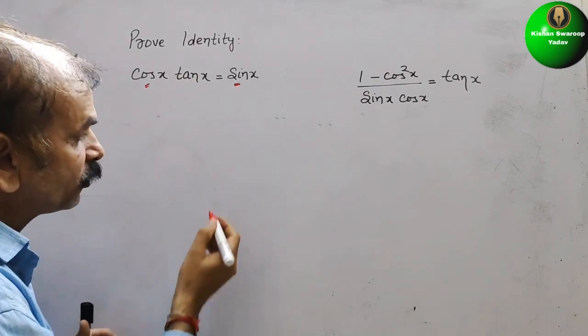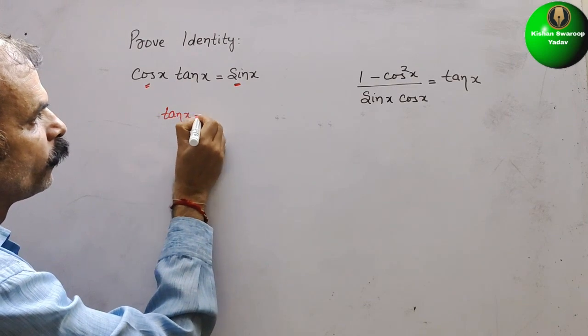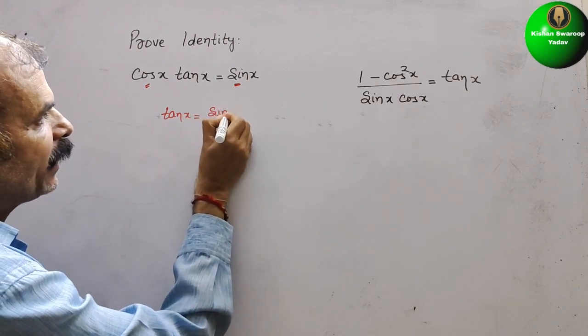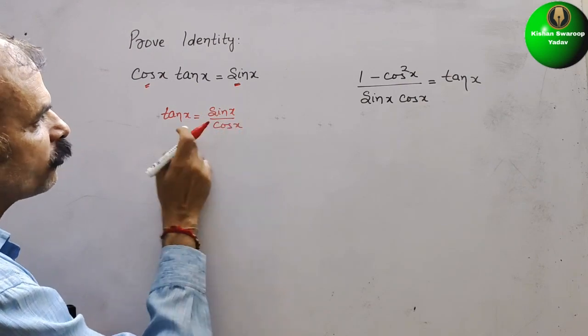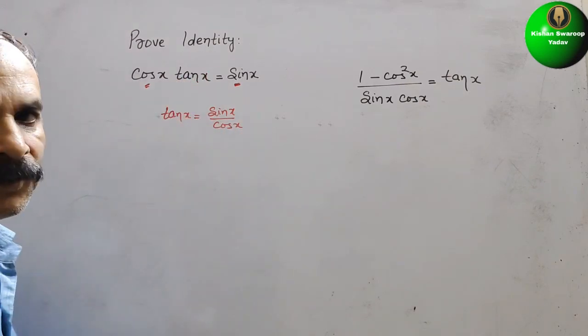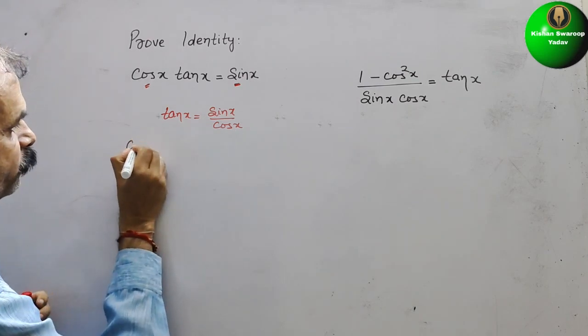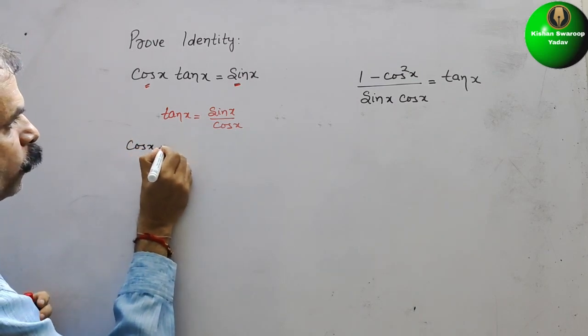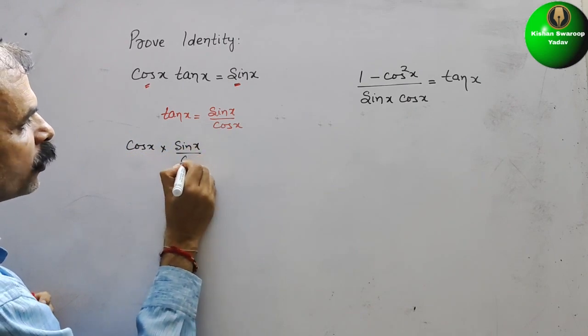So what is your tan x? We will write here tan x is equal to sin x by cos x. Now substitute this value here. So we will get cos x into sin x by cos x.